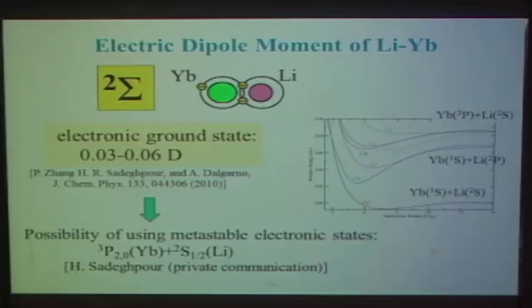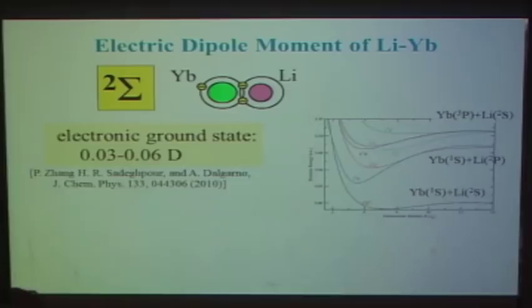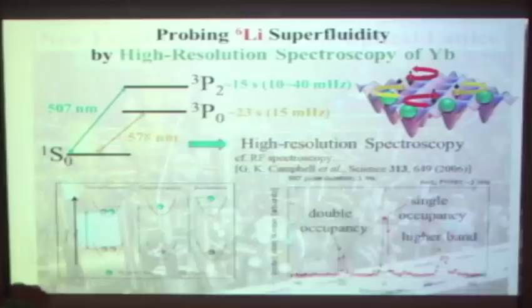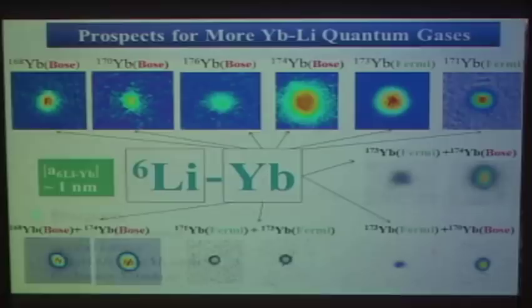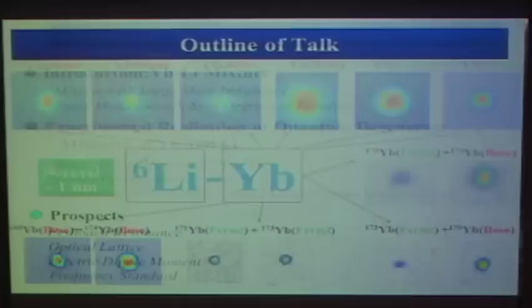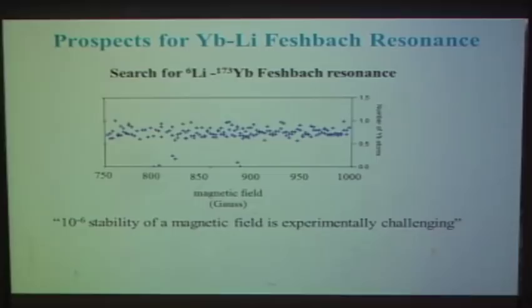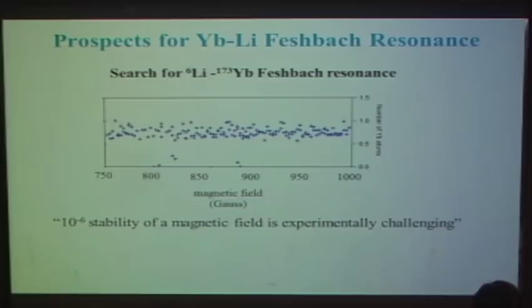Question: You mentioned the possibility of shifting the Feshbach resonance to lower magnetic field using a radiofrequency approach. How much can you shift? What is the realistic range? Answer: In principle we can shift to any value of the magnetic field, by choosing the frequency for coupling between the open channel and closed channel. But of course we need a careful estimation of the coupling radiofrequency for a useful Feshbach resonance.